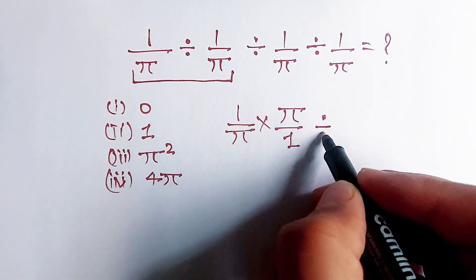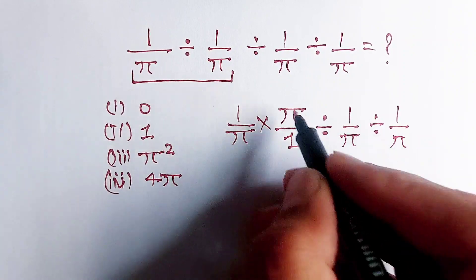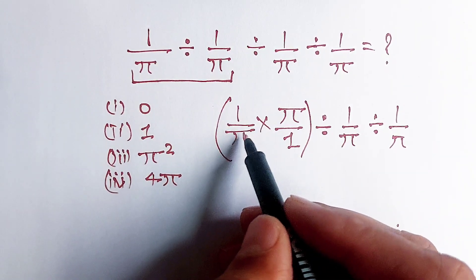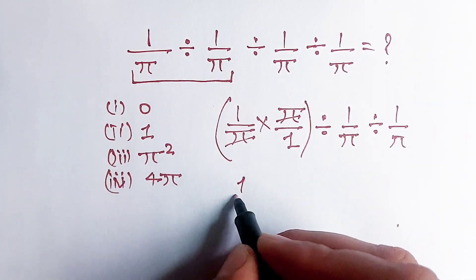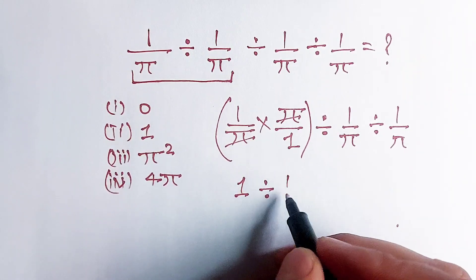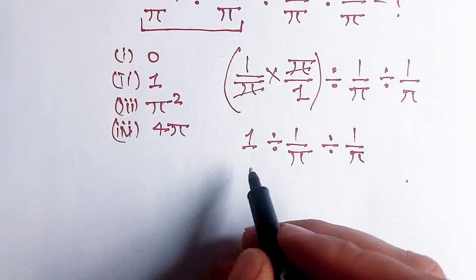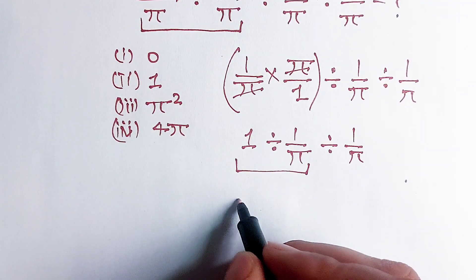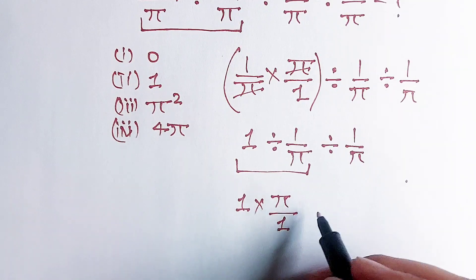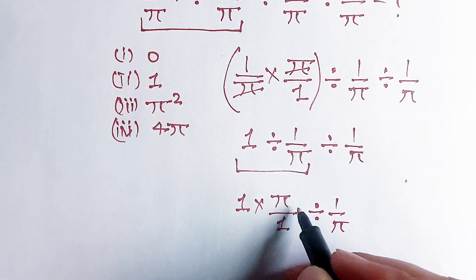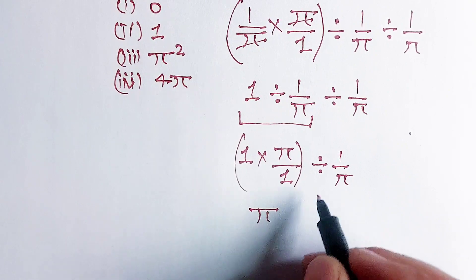Divided by 1 over π, and divided by 1 over π. This π will cancel with this π, and the value of this term becomes 1 divided by 1 over π, divided by 1 over π. We rewrite this term as 1 multiplied by π over 1, divided by 1 over π.